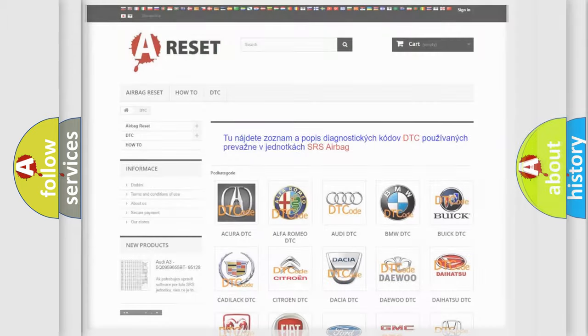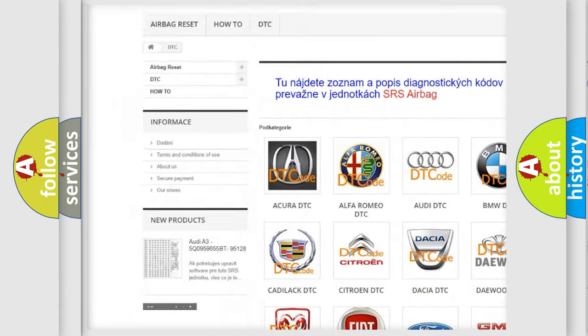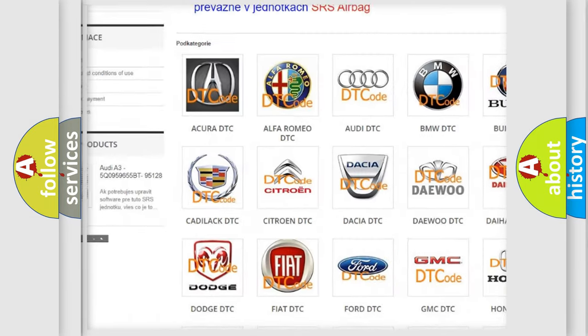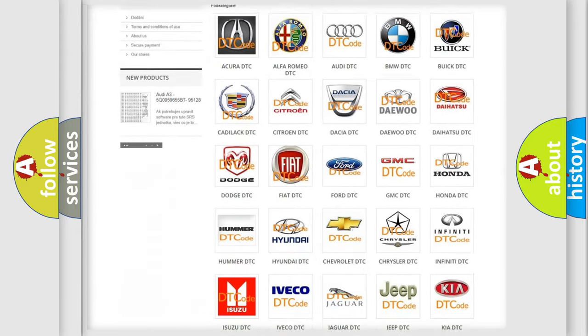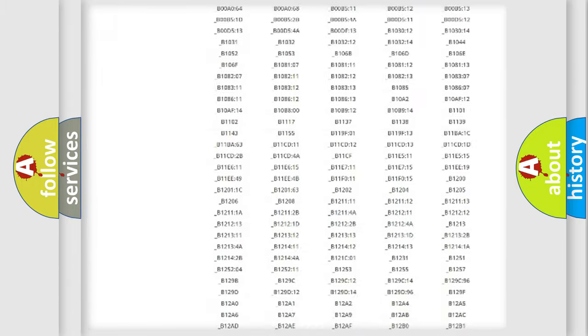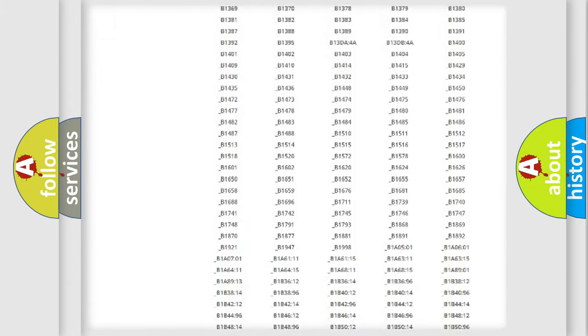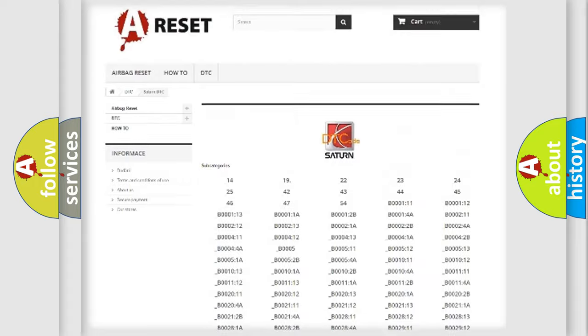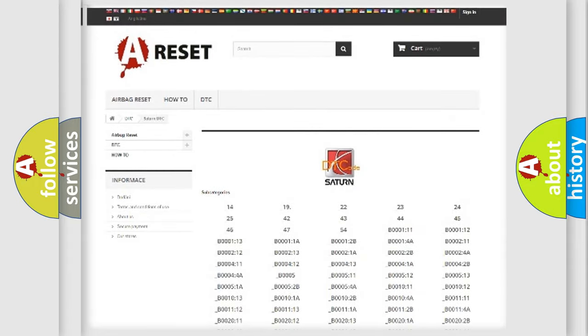Our website airbagreset.sk produces useful videos for you. You do not have to go through the OBD2 protocol anymore to know how to troubleshoot any car breakdown. You will find all the diagnostic codes that can be diagnosed in Saturn vehicles, also many other useful things.